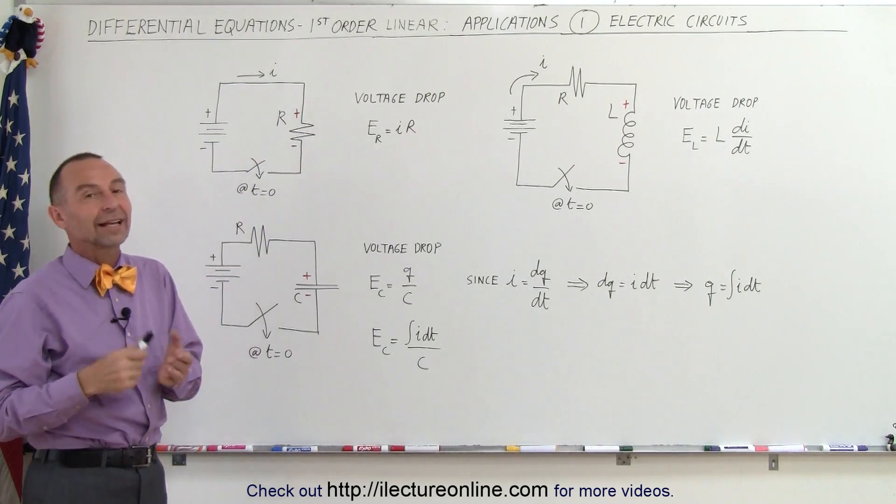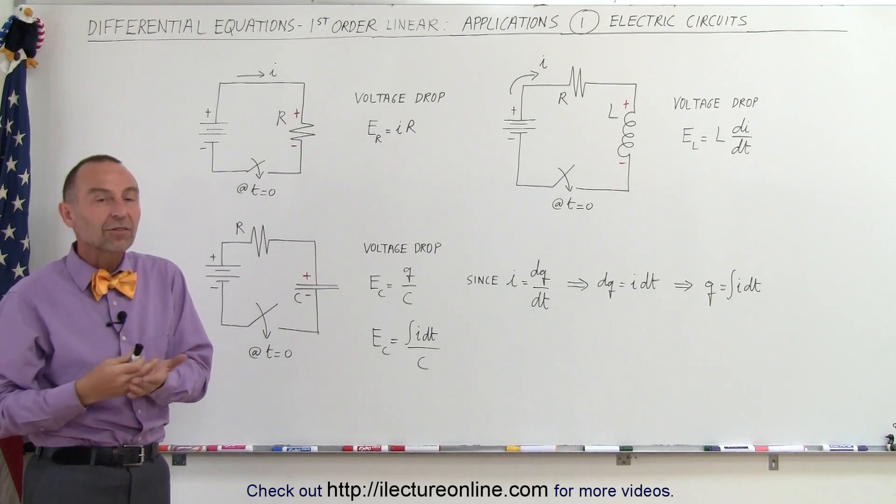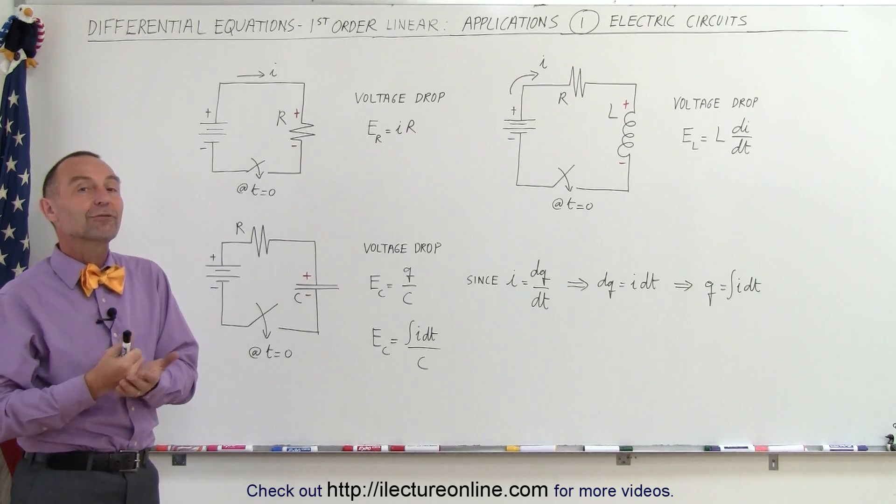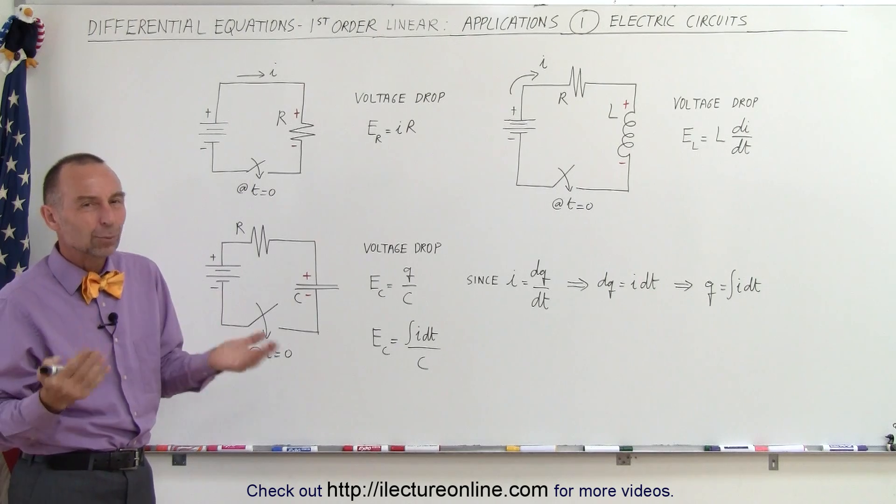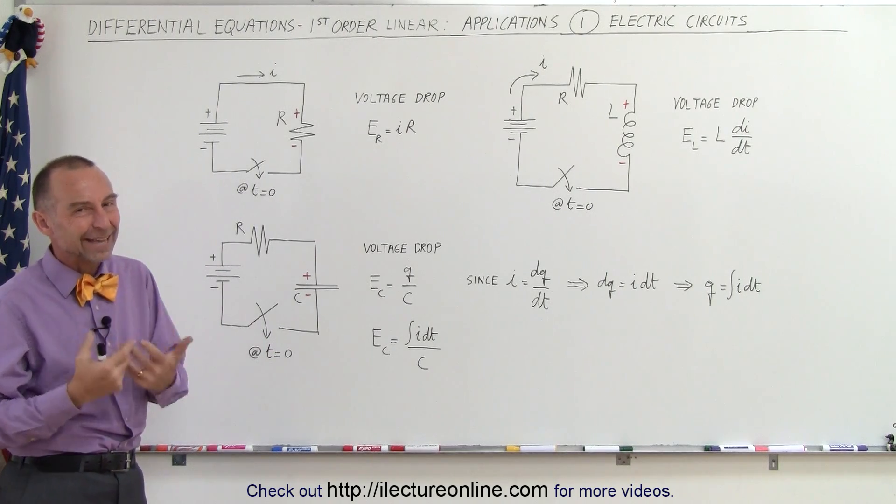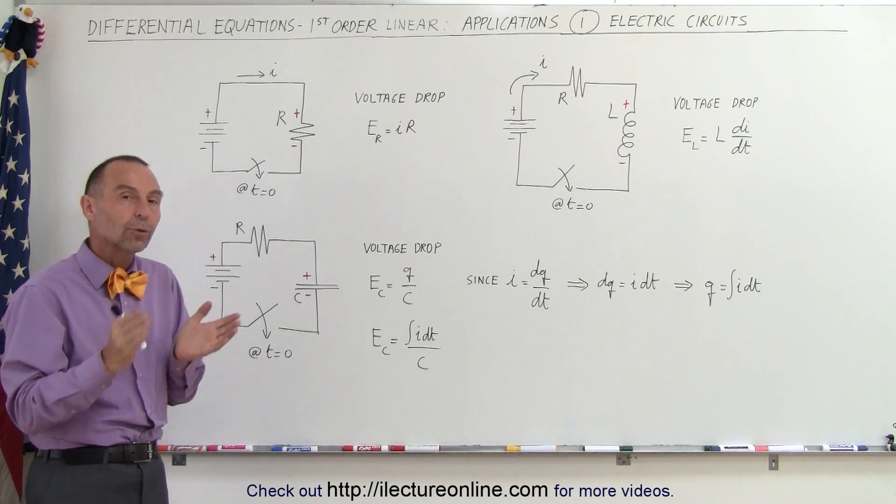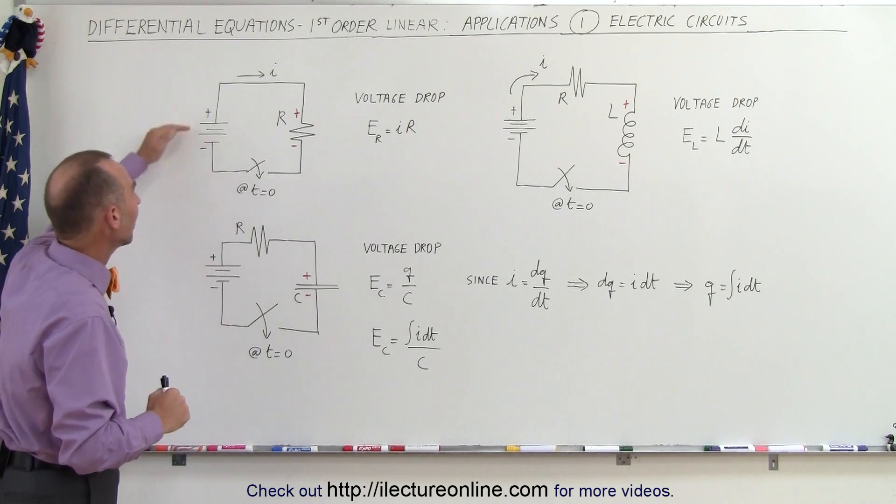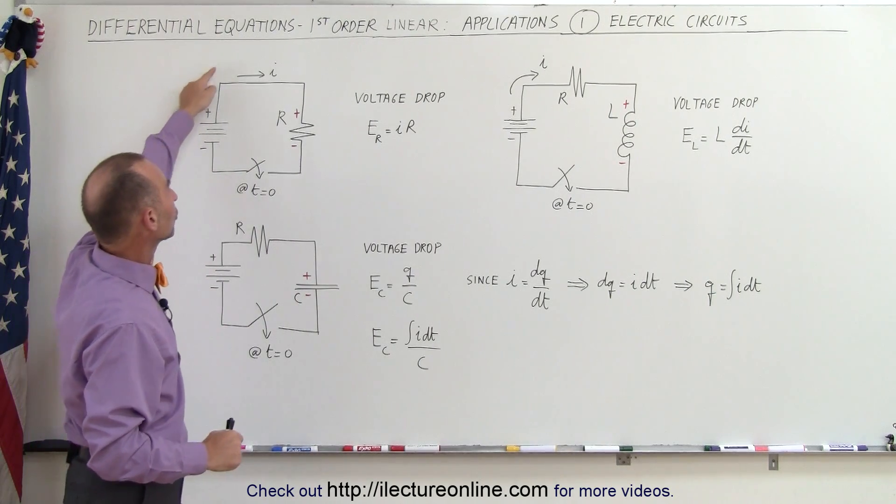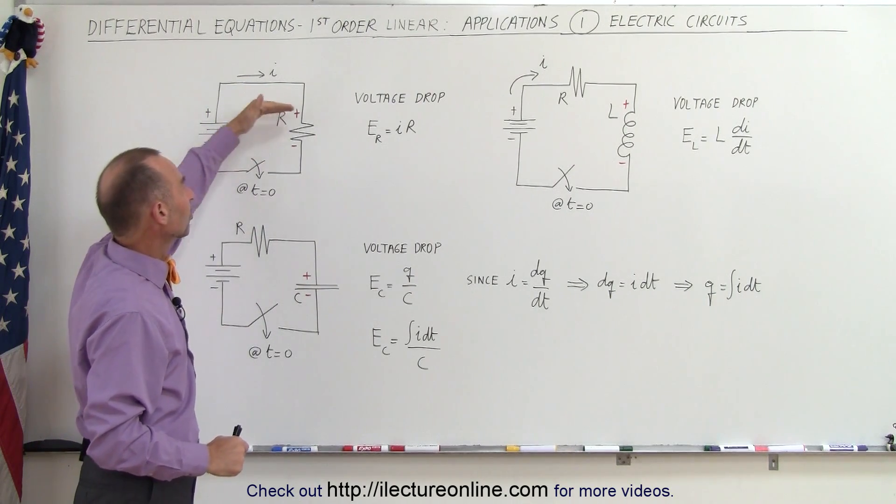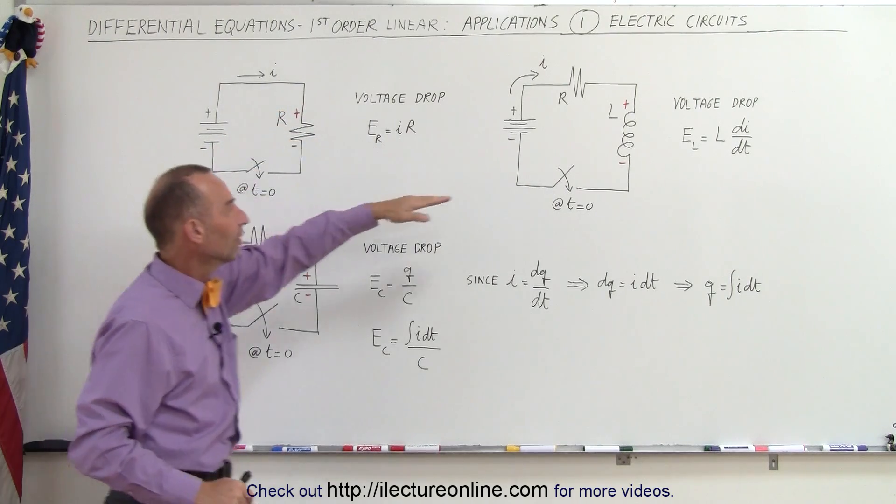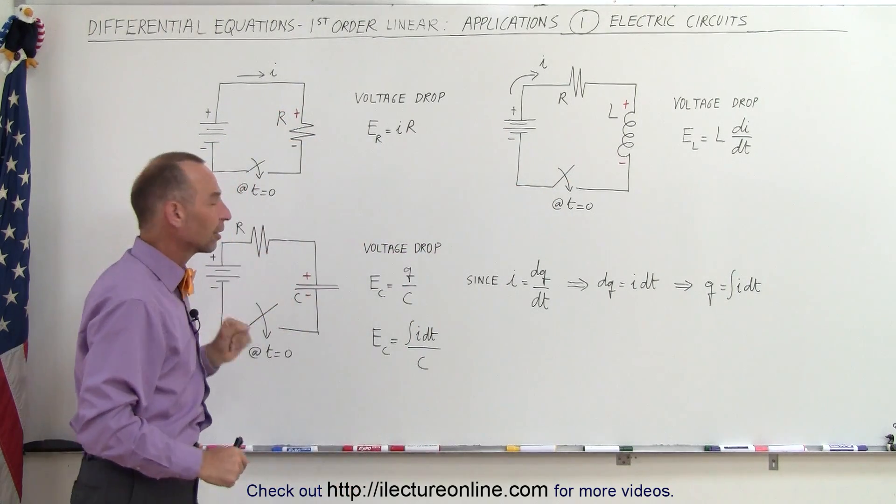In some engineering classes, they have current flow from negative to positive. In physics, it flows from positive to negative. It really doesn't make any difference—you get the exact same results as long as you start with one and stick with that type. So that means when the current comes around and we go across the resistor, we go from the positive to the negative side. Same for the inductor, same for the capacitor.